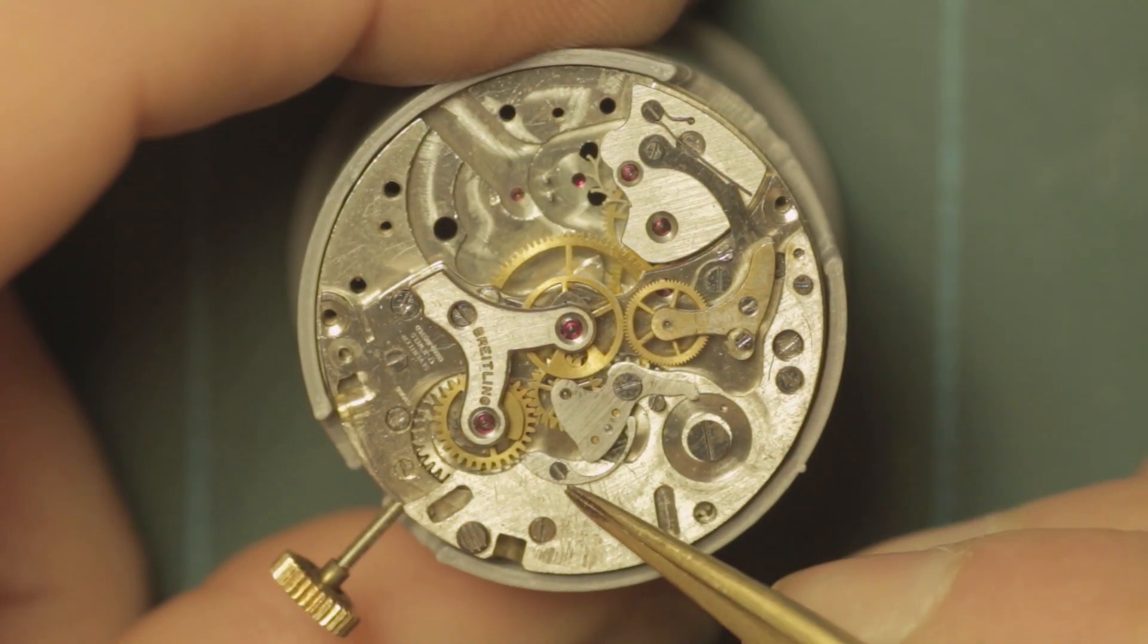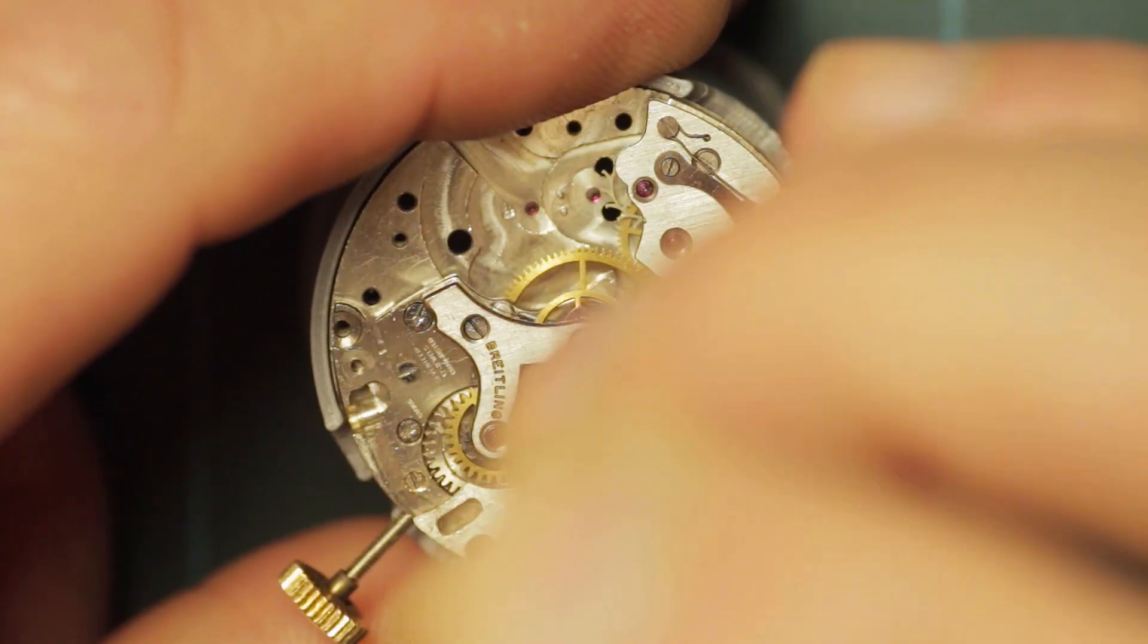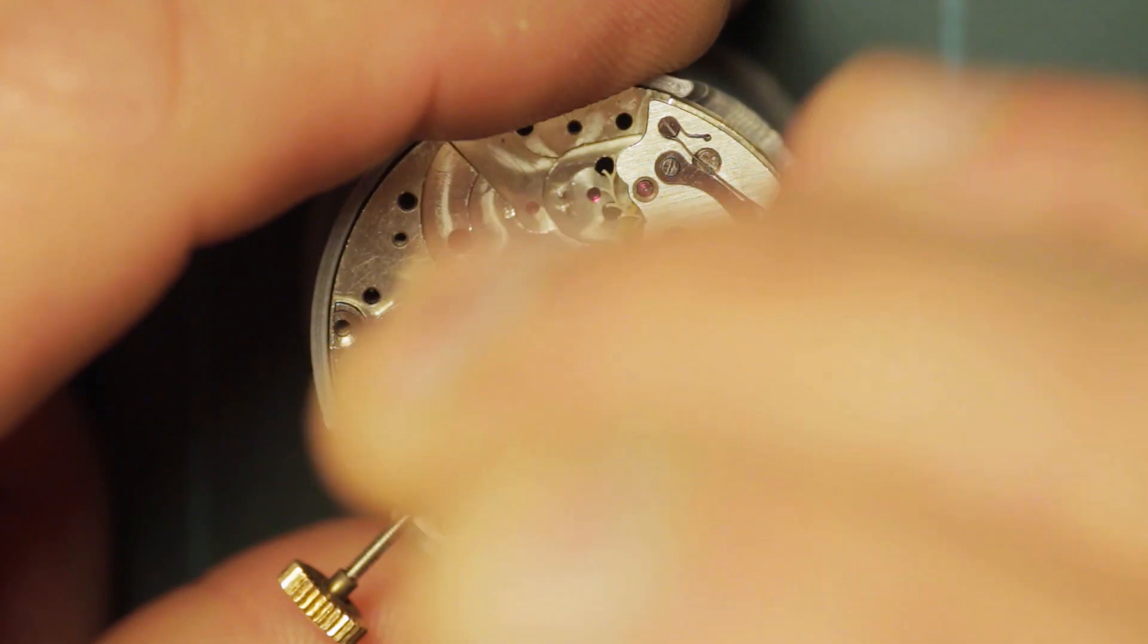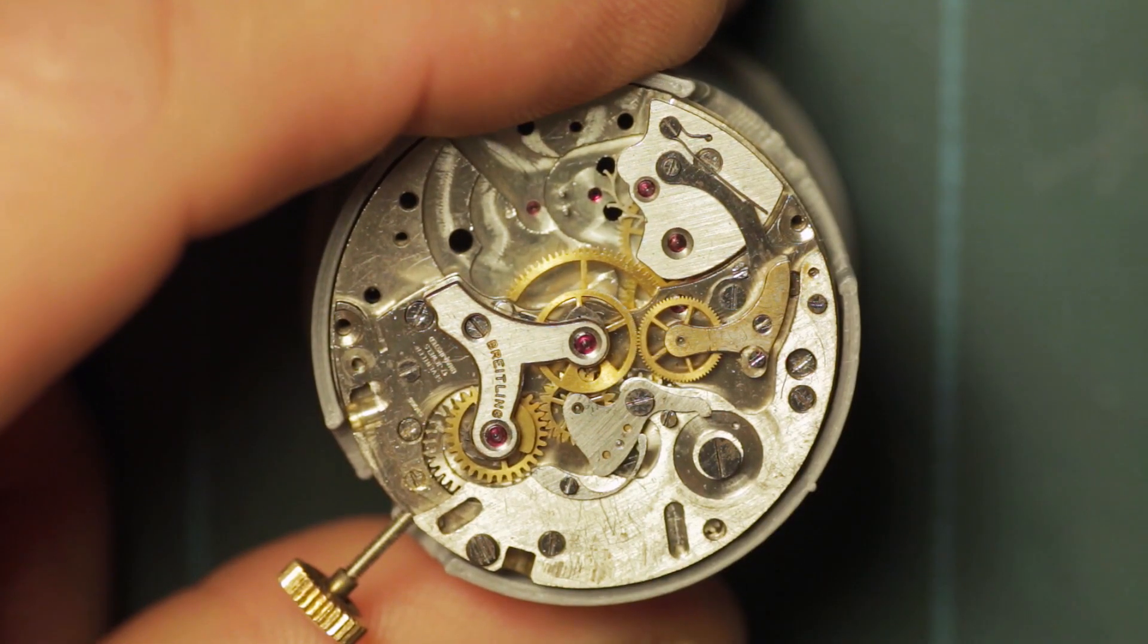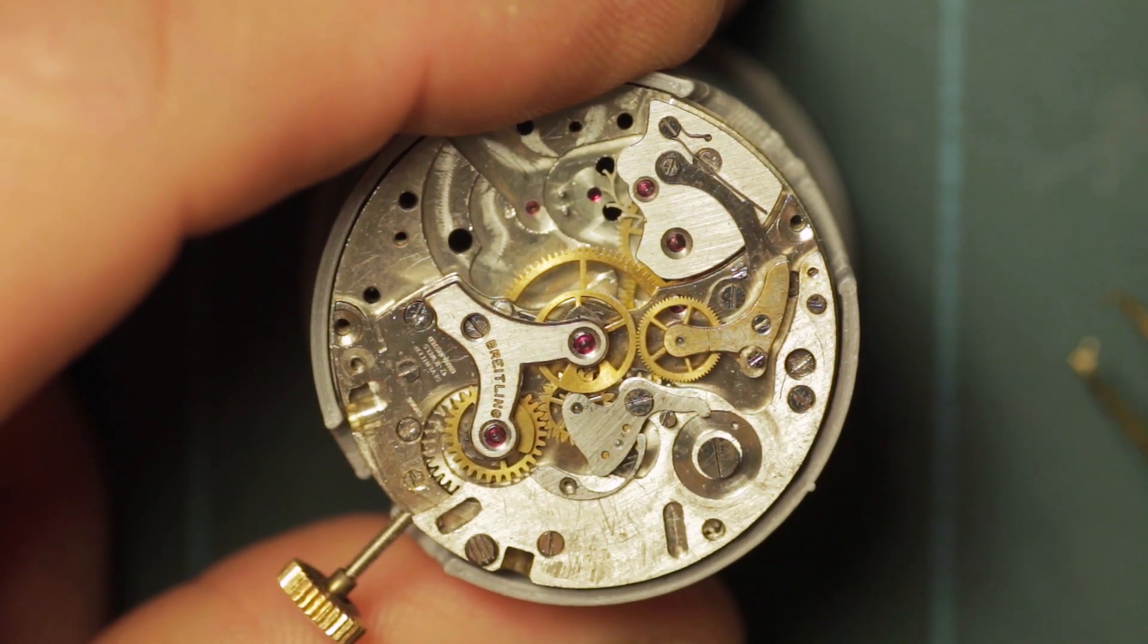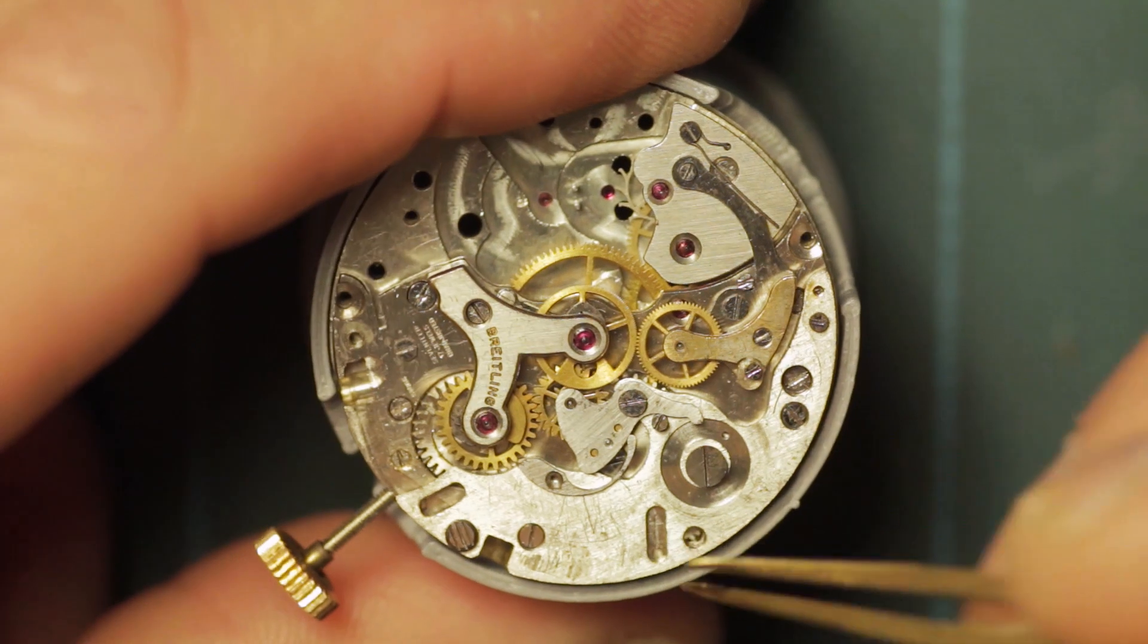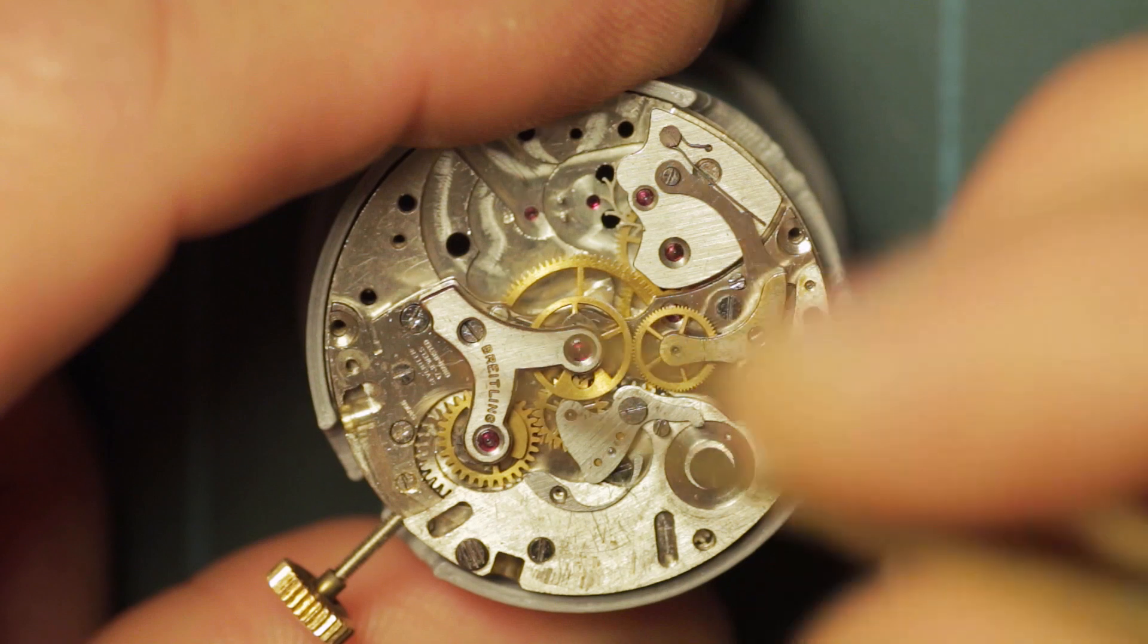Likewise here, the spring just shown there is removed first. This is the one that engages the intermediate wheel between the chronograph driving wheel and the minute wheel to move the minute wheel around in one minute increments via the jumper.